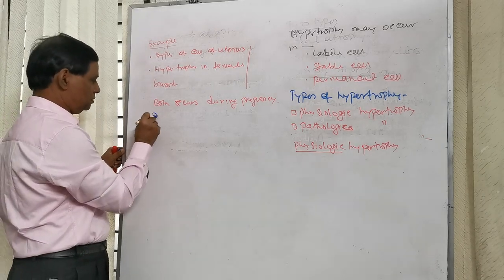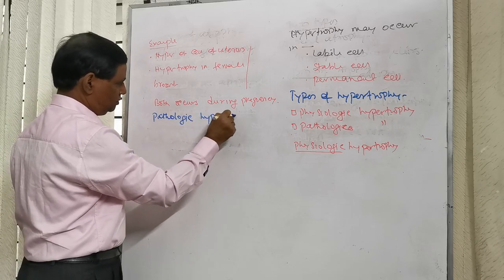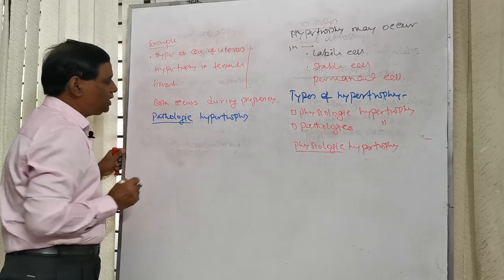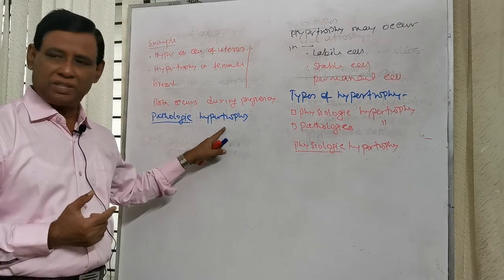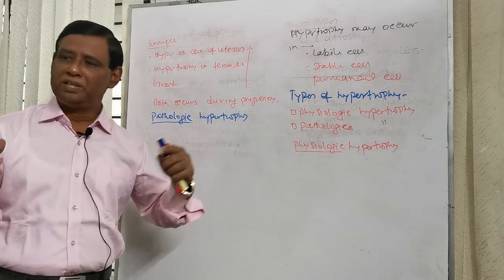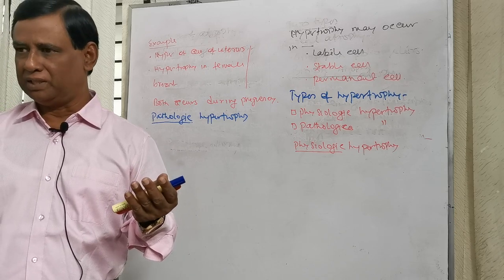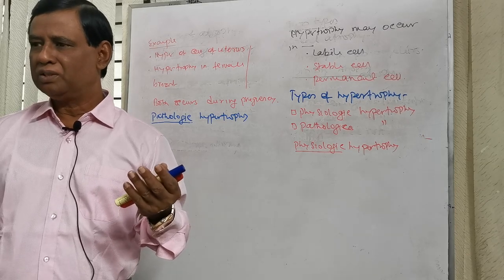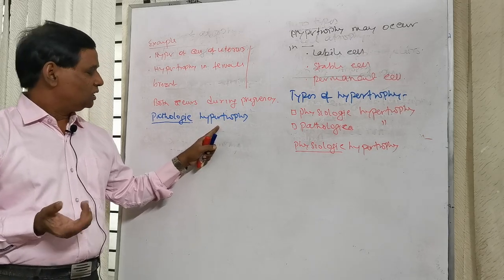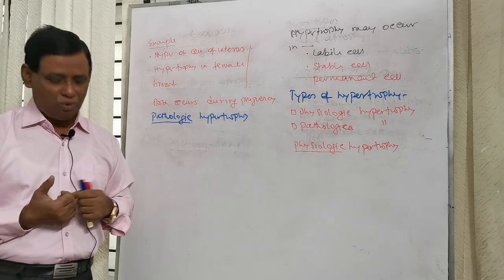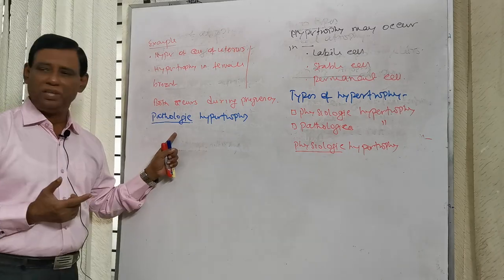Now come to pathologic hypertrophy. Why is it called pathologic hypertrophy? Here, hypertrophy occurs first in the organ — hypertrophy means increased size of cell, leading to increased size of an organ, due to increased number of cell substances. So hypertrophy occurs first, and this hypertrophy is then followed by pathology. Pathology means suffering, so the hypertrophy associated with suffering is called pathologic hypertrophy.